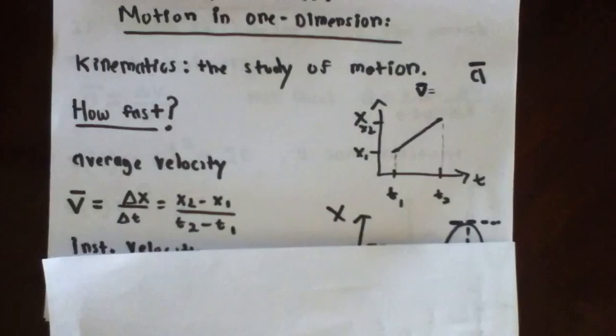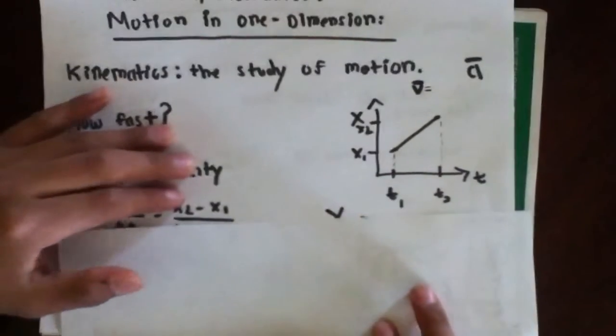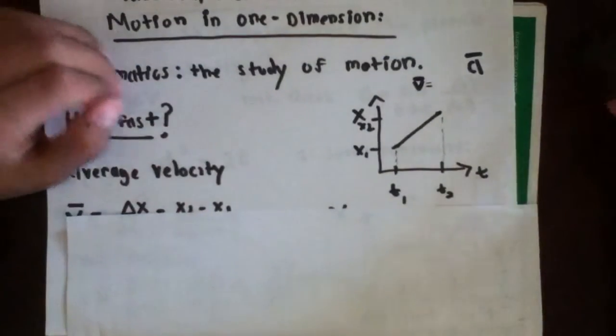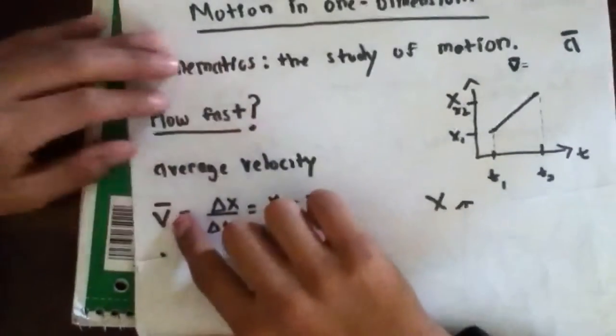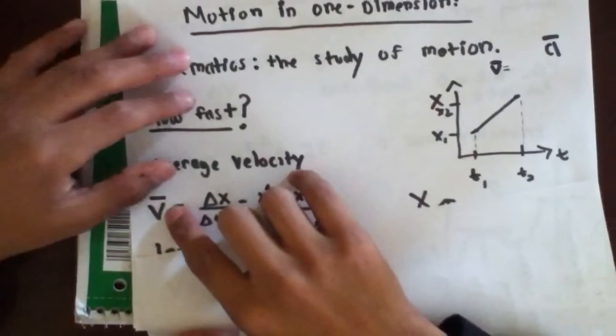Let's talk a little bit about average velocity first, and to do that, let's look at this graph. If I were to ask you, what is the average velocity, v bar, and let me just talk a little bit about the bar.